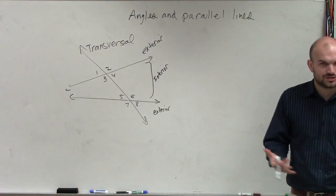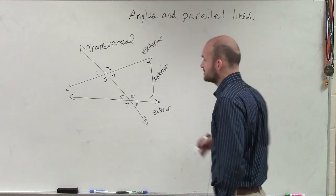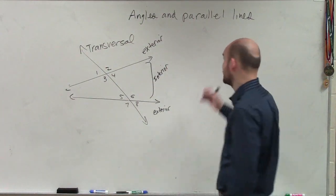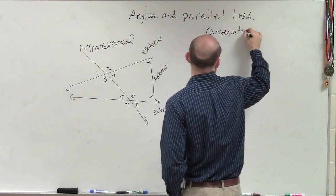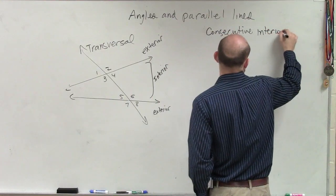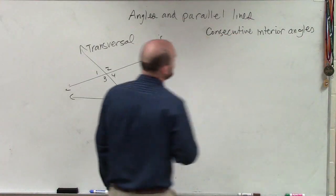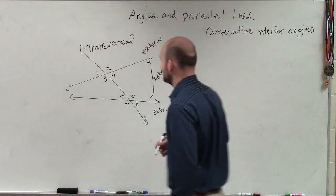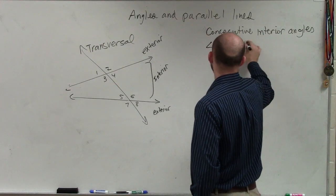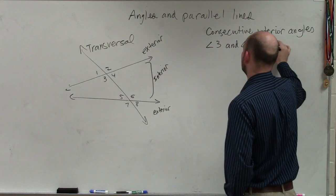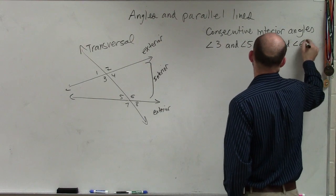And what we talked about was there's a relationship between our lines. So let's go back through our relationship. The first one we talked about was consecutive interior angles. Consecutive interior angles would be angle three and angle five, angle four and angle six.